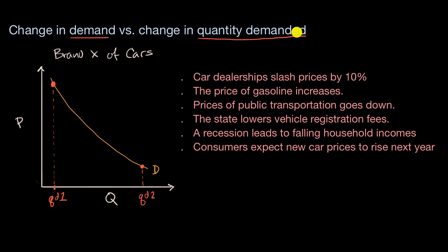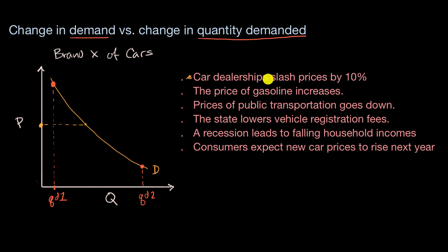There are a couple of ways to think about it. In order to shift the demand curve itself, one way I think about it is: if you were to pick a given price, does what's described here in any way shift the quantity that would be demanded at that price? Well, no — this is not shifting how much consumers would want to buy at that price. This is shifting the price itself. So this is going to be a shift along the demand curve.